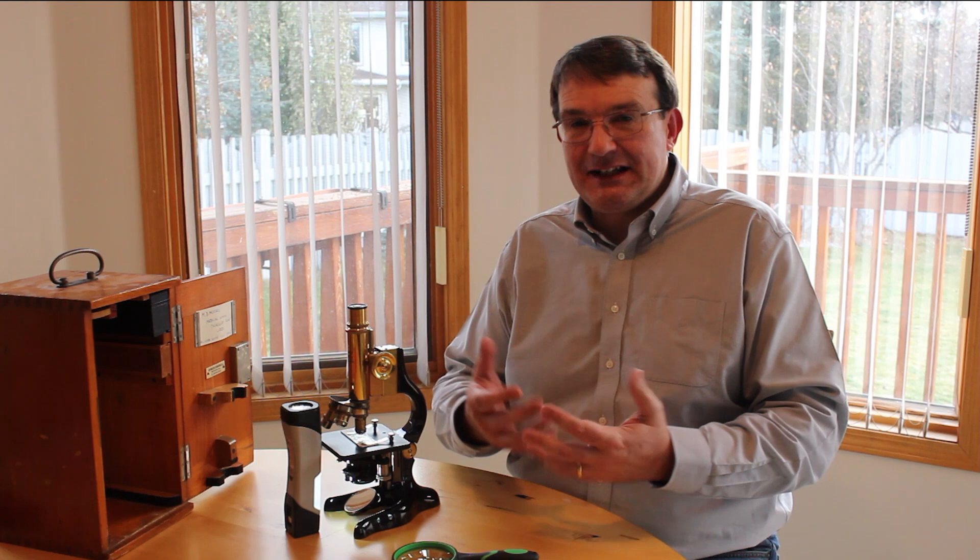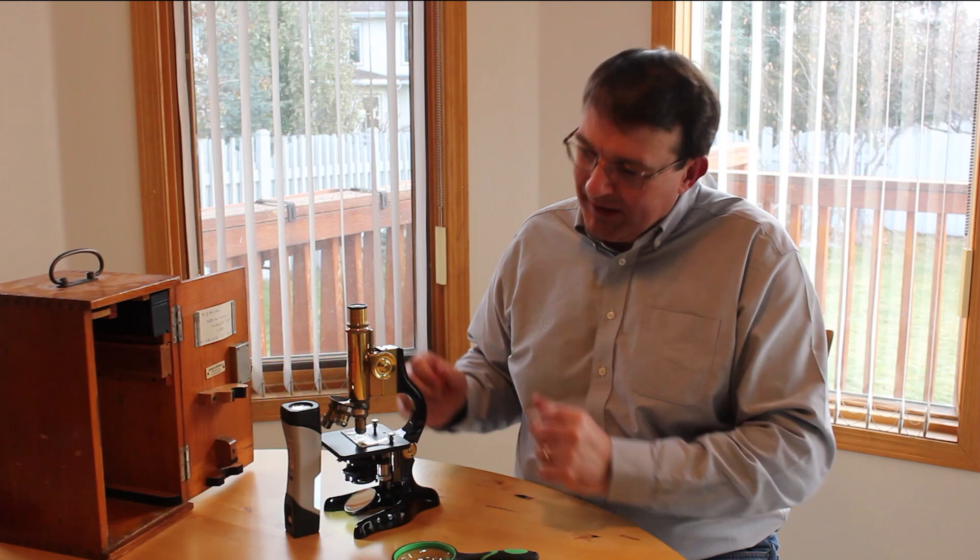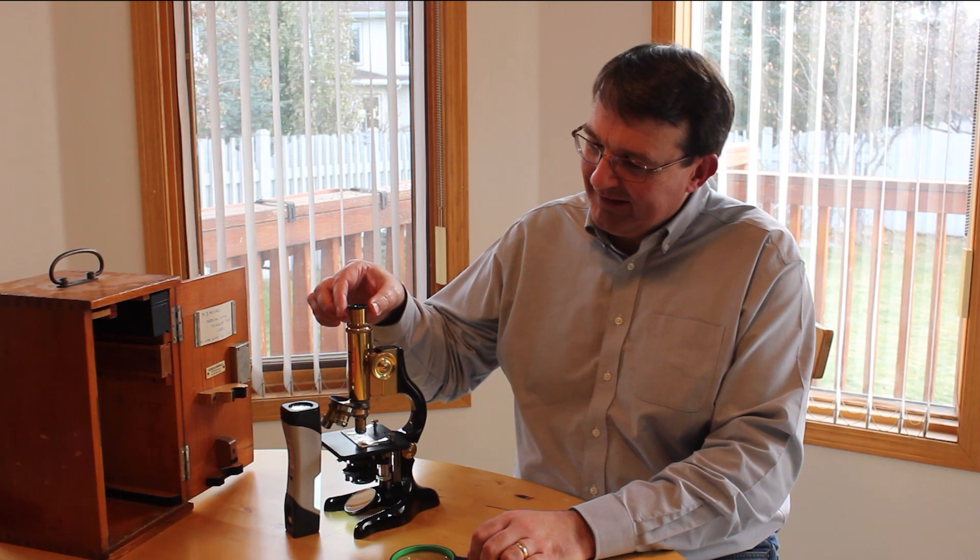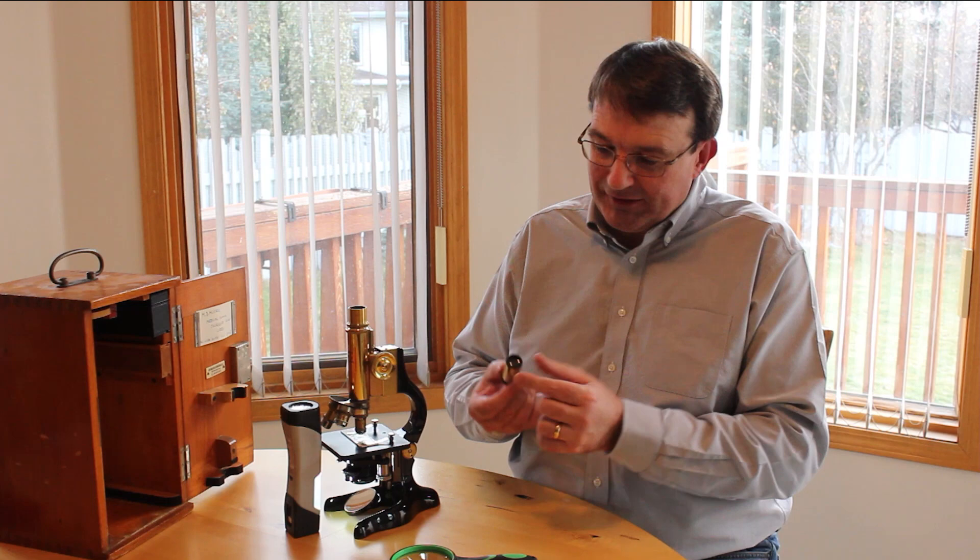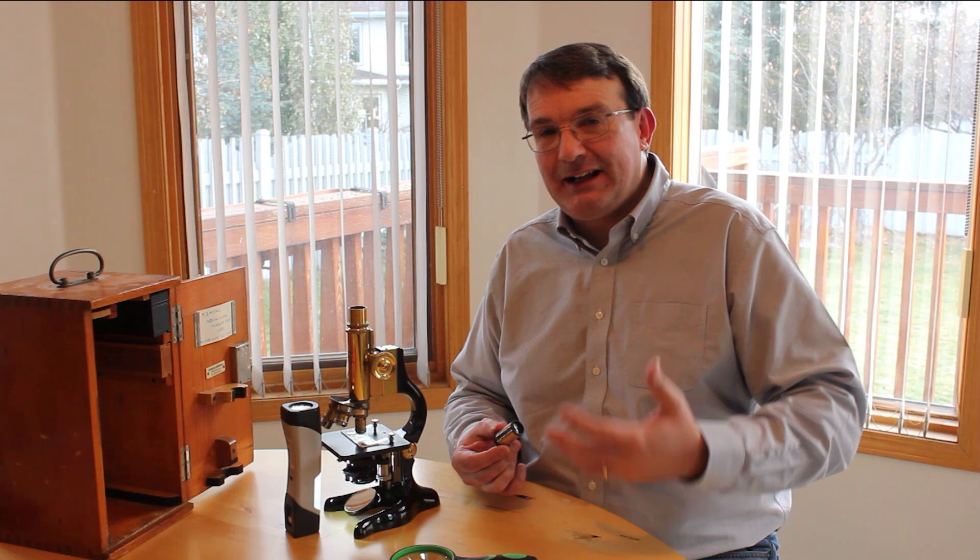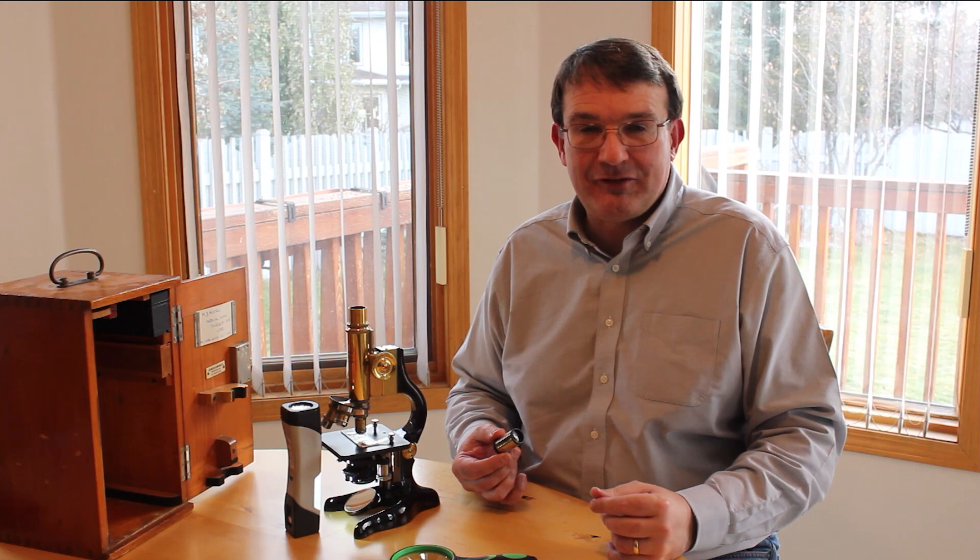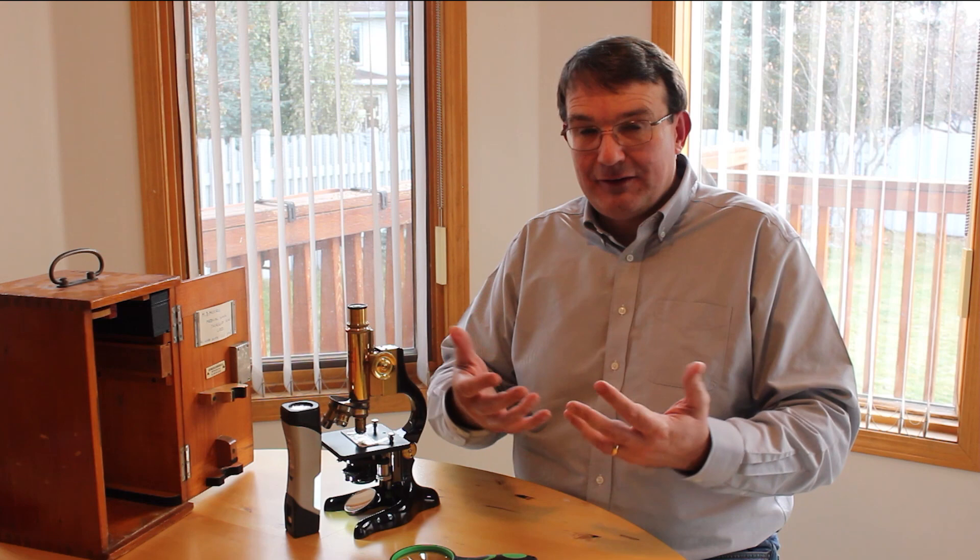This microscope is more complicated than just two simple converging lenses. It has replaceable eyepieces and replaceable objective lenses. The eyepiece, although it contains a converging lens, is actually a sequence of lenses. Those extra lenses are there to correct for different types of aberrations such as spherical aberration and chromatic aberration so that you can see clearly through the microscope. This was what limited the resolving power, the magnification power of early microscopes: the inability to make these complicated high quality lens systems.